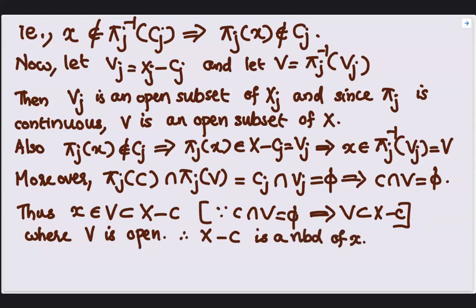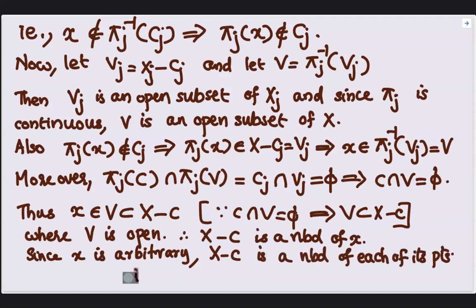Since small x is arbitrary, we can conclude that X minus C is a neighborhood of each of its points, that is the set X minus C is open and the complement C is closed. This completes our proof.